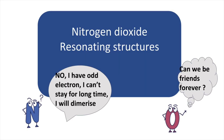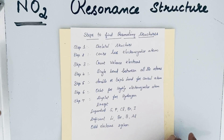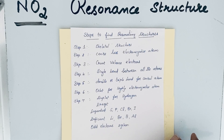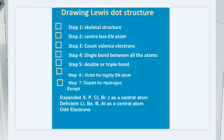Welcome to Aurora Chemistry for Everyone. In this video, let us see how to write the resonating structure for NO2 (nitrogen dioxide) using simple steps. To write the resonating structure, first we should write the Lewis dot structure. So using the steps, let us write the Lewis dot structure for NO2.